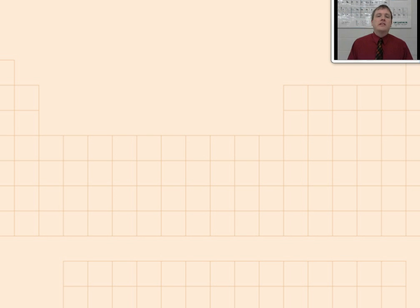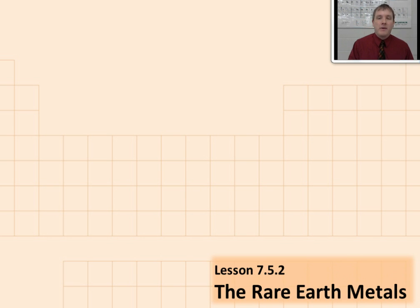In this lesson, we're going to learn about a group of metals that is unreactive, but also has a very predictable amount of electrons that they gain or lose. We're going to be learning about the rare earth metals.